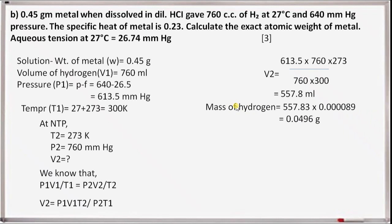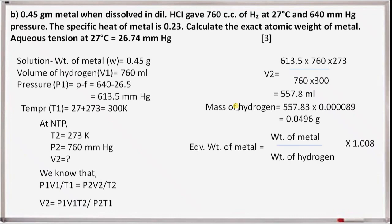Mass of hydrogen equals 557.83 multiplied by 0.000089, which equals 0.0496 grams. Equivalent weight of metal equals weight of metal divided by weight of hydrogen, multiplied by 1.008, which equals 0.45 divided by 0.0496, multiplied by 1.008, which equals 9.14. This is the equivalent weight of the given metal.